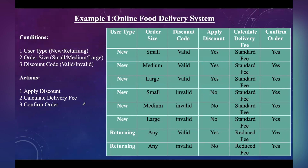Let us see one example. The conditions are user type, order size, and discount code — these are the inputs that affect the decision making process. The actions, which are the expected outputs based on the combination of conditions, are: apply discount, calculate delivery fee, and confirm order. We need to calculate these outputs based on the conditions.